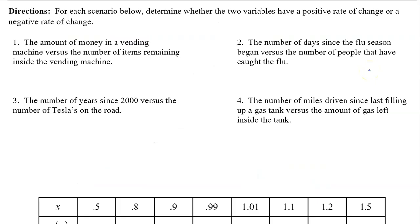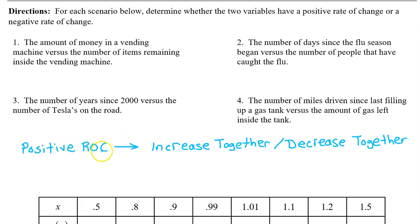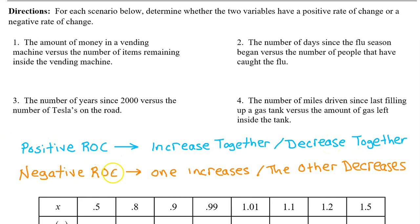For each scenario below, determine whether the two variables have a positive rate of change or a negative rate of change. A positive rate of change between two quantities means they increase together and decrease together — as one increases, the other increases; as one decreases, the other decreases. A negative rate of change means that as one quantity increases, the other decreases.